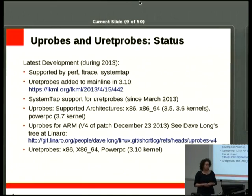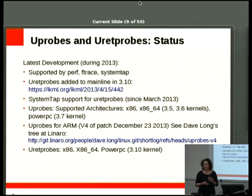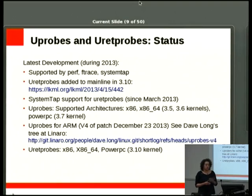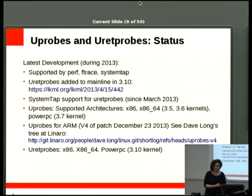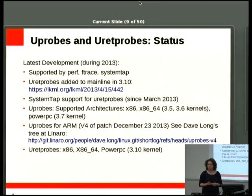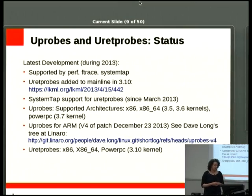Status-wise: uprobes are supported with perf, ftrace, SystemTap, and others. ureturn probes were the latest addition in 3.10; SystemTap has been supporting those. Architectures supported are x86, x86_64, and PowerPC. There is current work going on for ARM — a new version of the patch was recently posted and is under review. ureturn probes are still a little behind but coming.